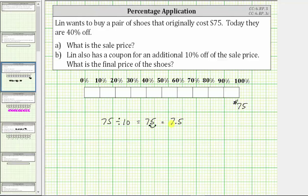7.5 or $7.50 is 10% of $75, which means we can label $7.50 here.